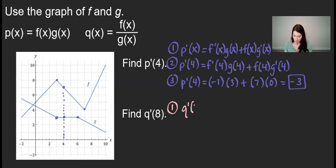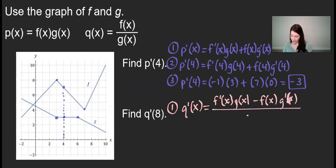q prime of x is equal to the derivative of the numerator times the denominator minus the numerator times the derivative of the denominator, all over the denominator squared. And that is just the quotient rule for that quotient of functions.